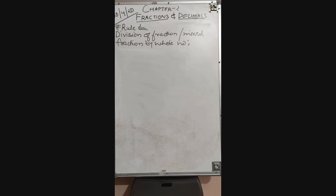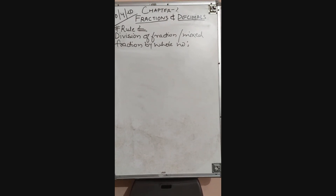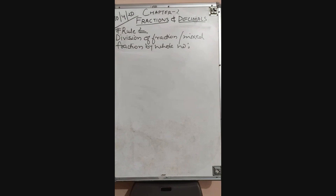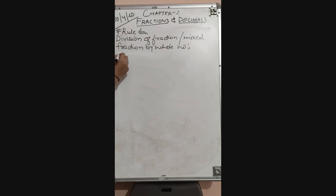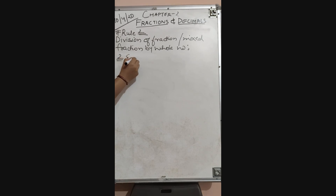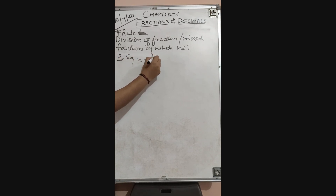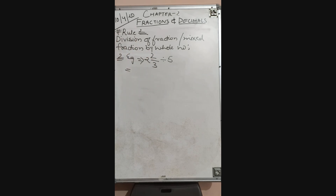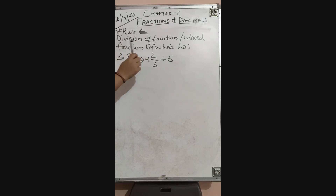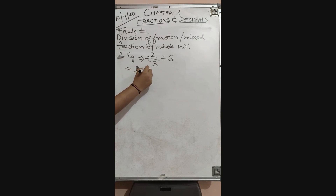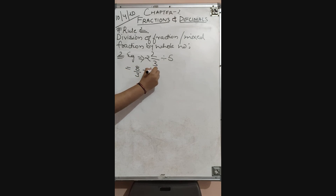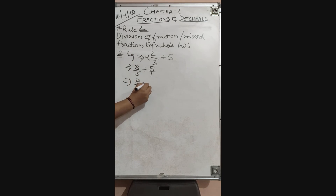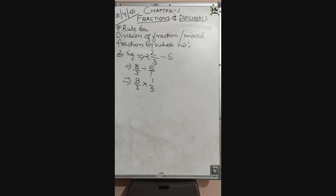Condition 2: to divide a mixed fraction by a whole number, convert the mixed fraction into an improper fraction and then solve it. For example, 2 and 2 upon 3 divided by 5. Convert: 3 twos are 6, plus 2 is 8, so it becomes 8 upon 3. The whole number 5 is written as 5 upon 1. Now reciprocal: 8 upon 3 multiplied by 1 upon 5.